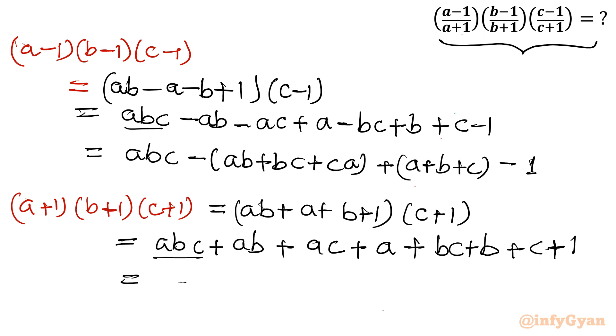Again, same job. I will write abc as it is. Then after we have ab, ac, bc, so we will put in one bracket: ab + bc + ca. We know these values, so we will directly put those values. Then after we have a + b + c + 1.